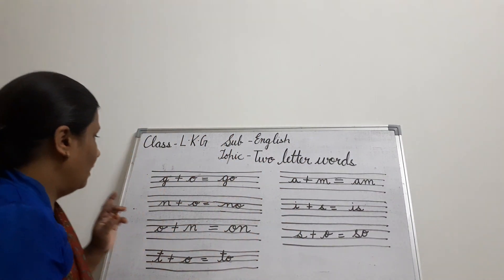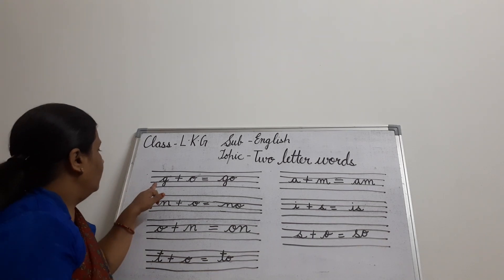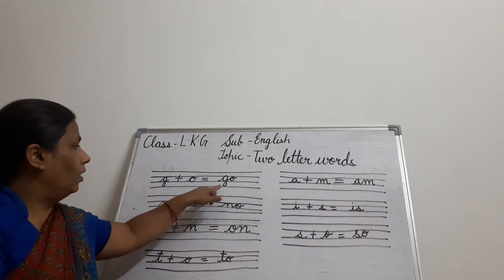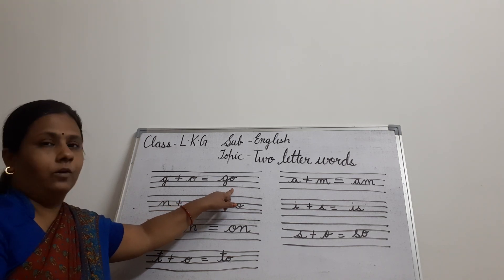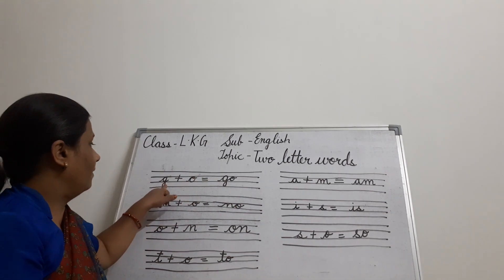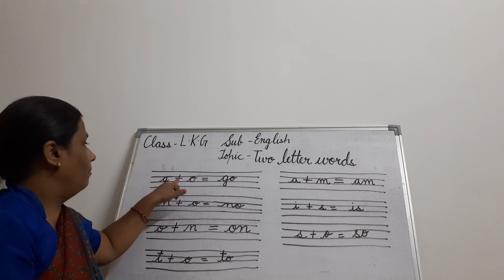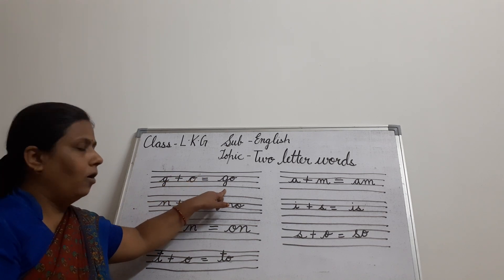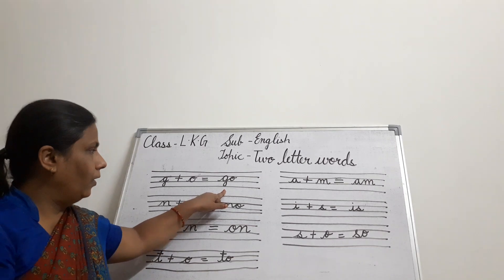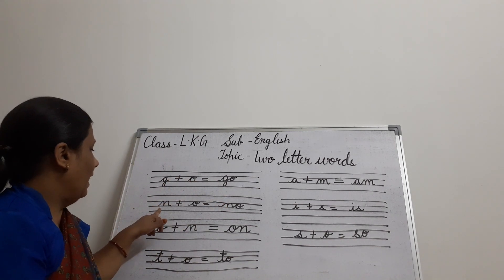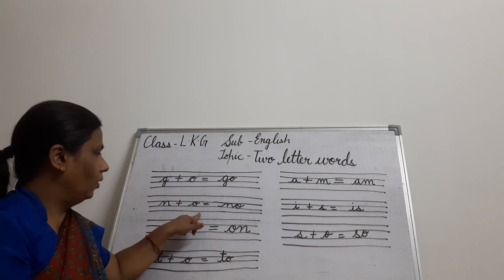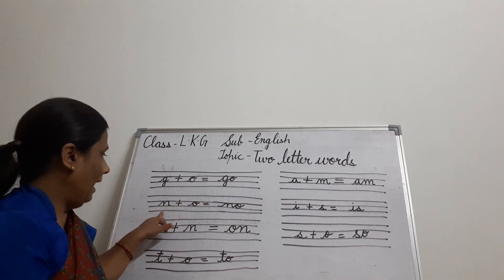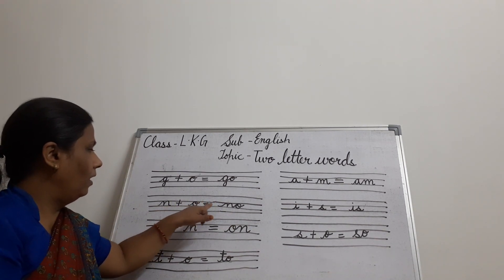So now see here. We will write G plus O — go. G-O, go. Two letter words. N plus O — no. N plus O, no.